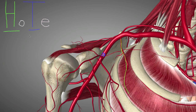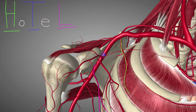The E again doesn't stand for anything, but the L stands for Lateral Thoracic Artery. Here it is on the lateral side of the thorax — Lateral Thoracic Artery.